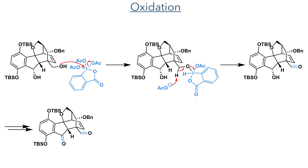In the next step, these alcohols were oxidised using Dess-Martin periodinane to bring them to the +2 oxidation level. In this reaction, the oxygen first attacks the iodine centre and acetate is eliminated. This acetate then acts as a base to deprotonate the molecule, forming a carbon-oxygen double bond and eliminating the iodine by-product. This reacted with both the primary and secondary alcohols, forming an aldehyde and a ketone.